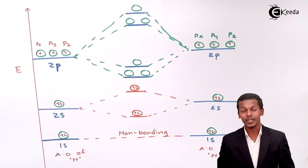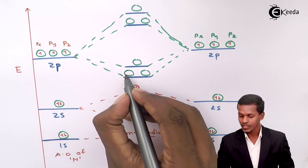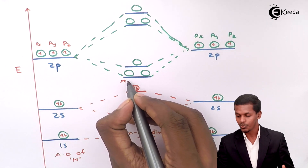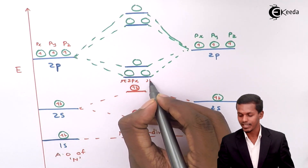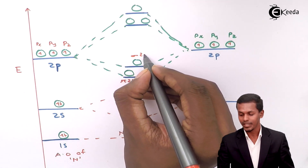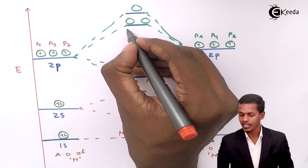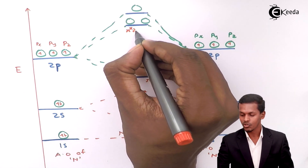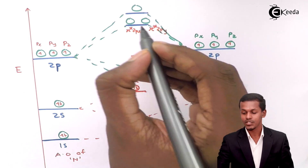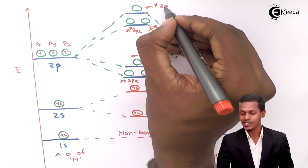Now let us fill the electrons, but before that let us designate the orbitals. This one is known as pi 2px orbital, this is pi 2py orbital, and this is sigma 2pz — the bonding orbital. This is pi* 2px orbital, this is pi* 2py orbital, and this one is sigma* 2pz orbital.